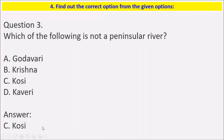Third question: Which of the following is a north peninsular river? The peninsular region is in the south of India where three sides are covered with water. The river which is not a peninsular river is Koshi.